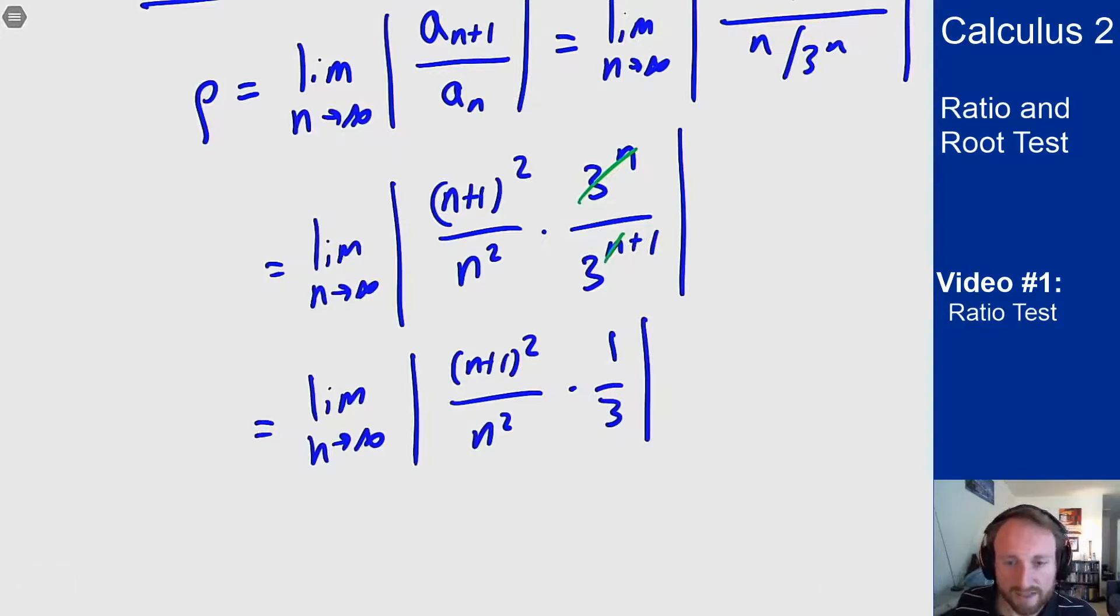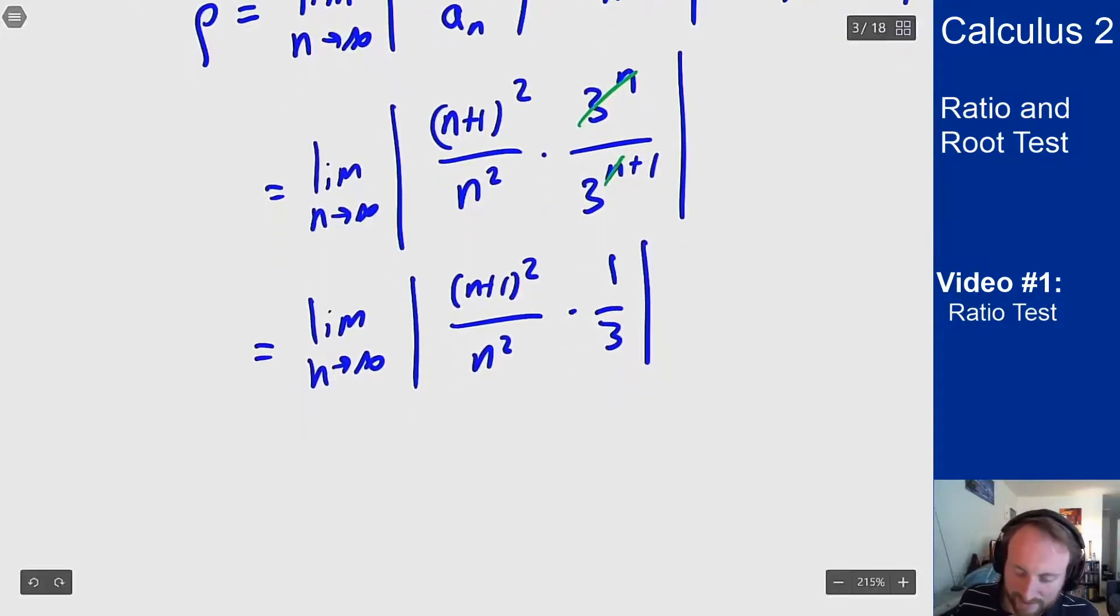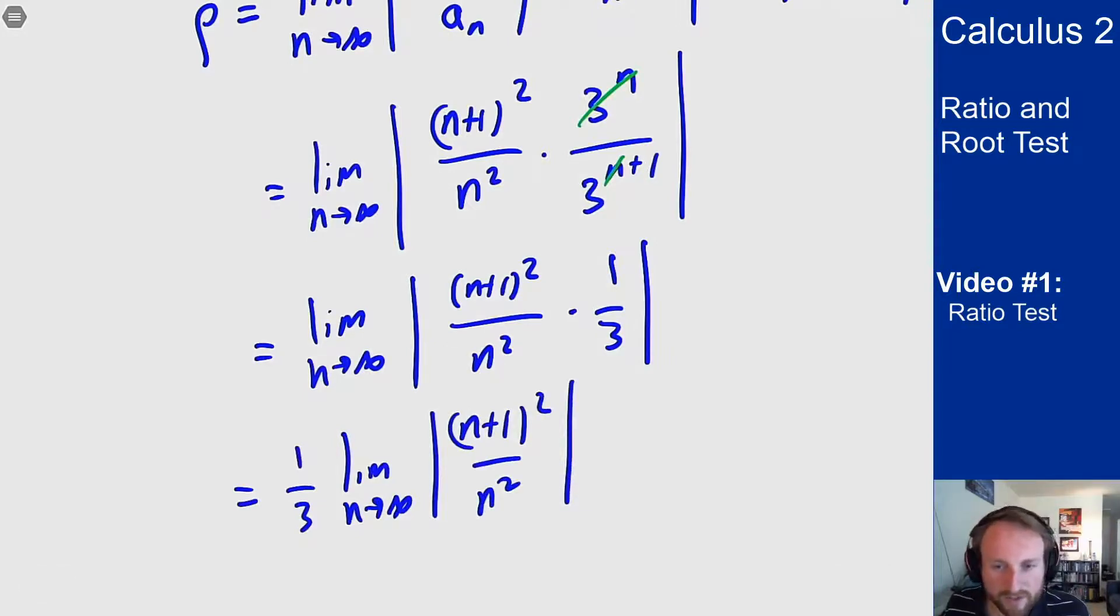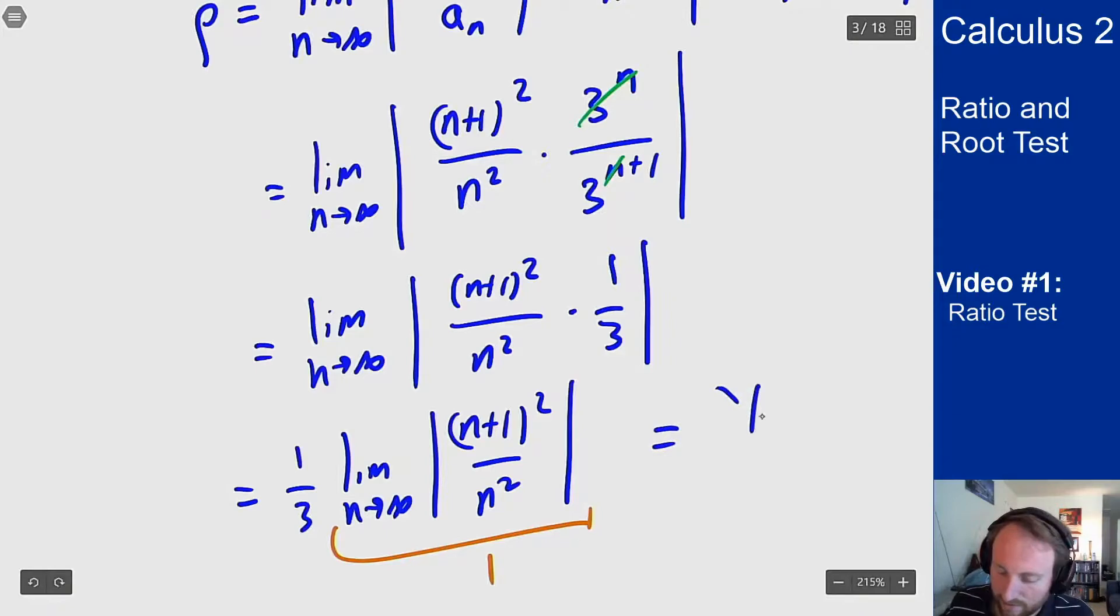And then what happens to this thing inside? Well this thing inside I will get 1/3 times the limit as n goes to infinity (n+1)² over n². It's a rational function so that's going to follow our highest power rule. On the top I have an n² which has coefficient 1. On the bottom is also n² coefficient 1. Therefore this whole limit here is 1 meaning my answer here is 1/3.